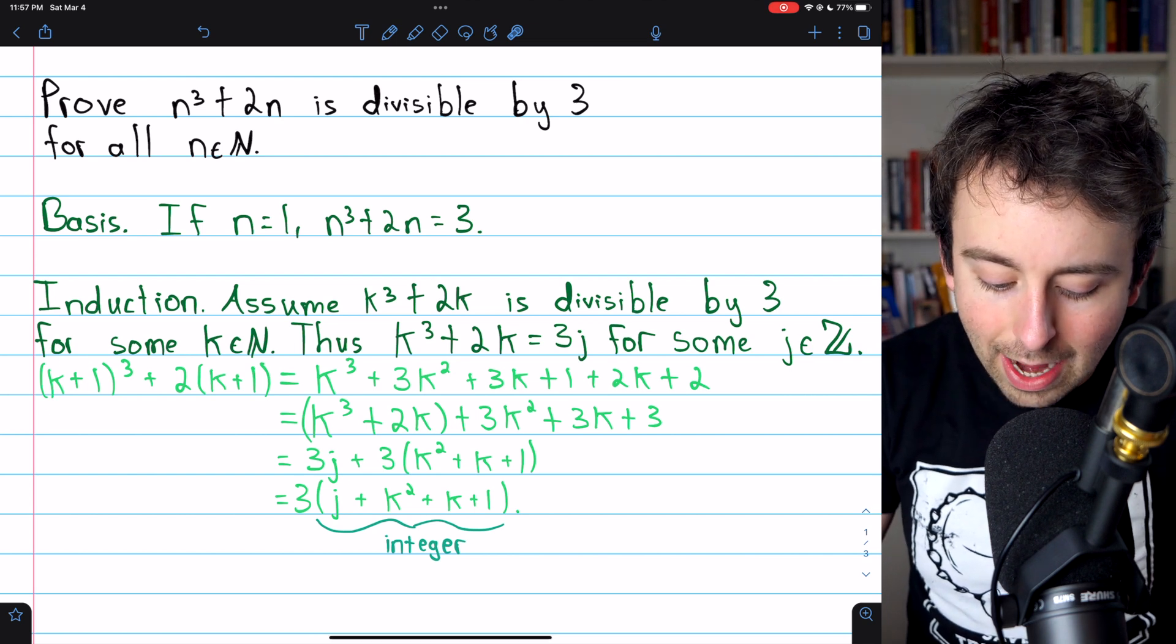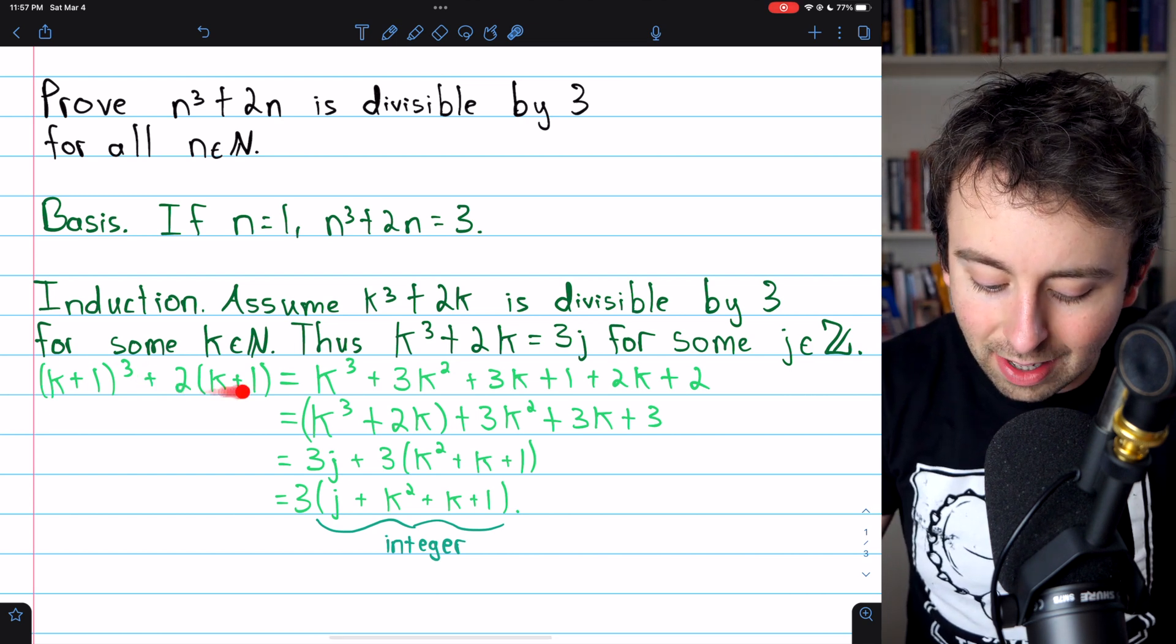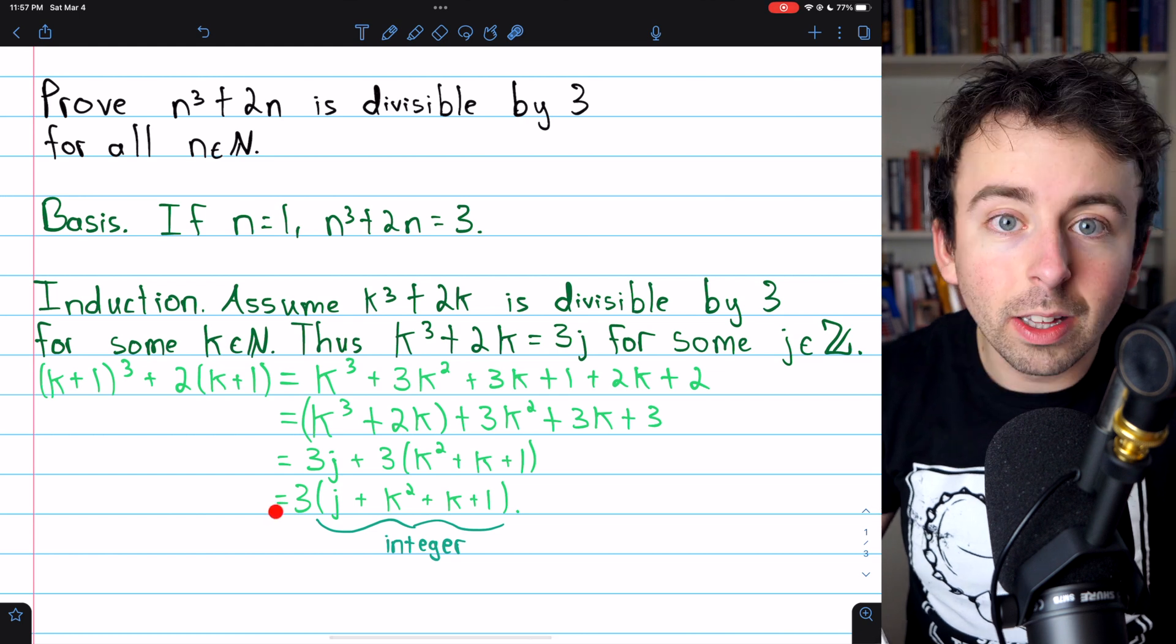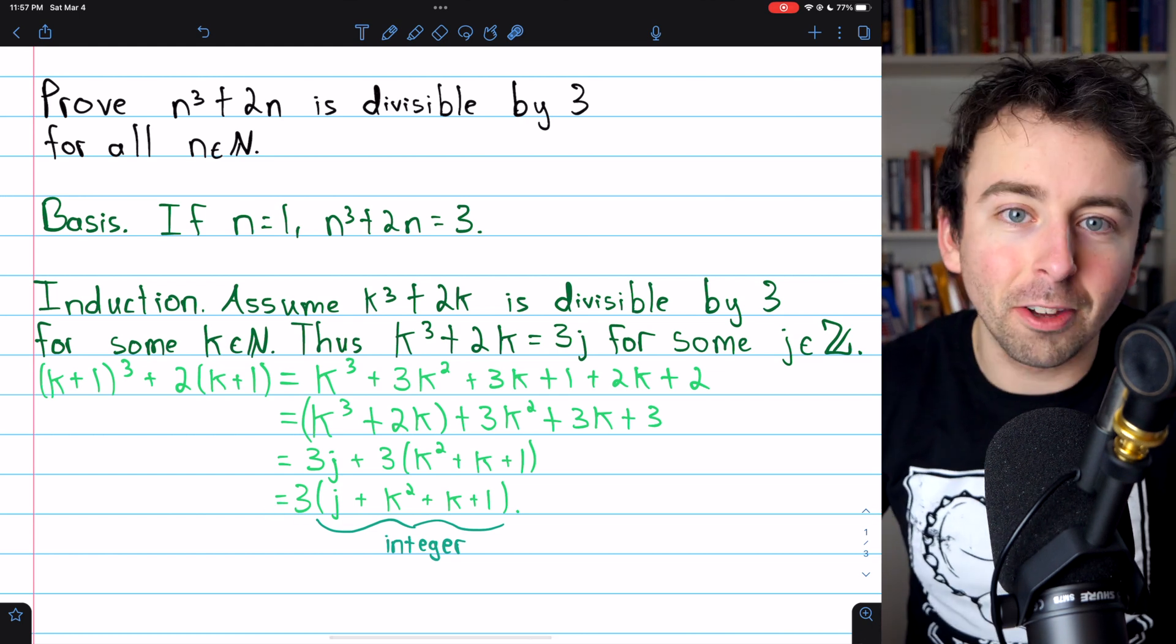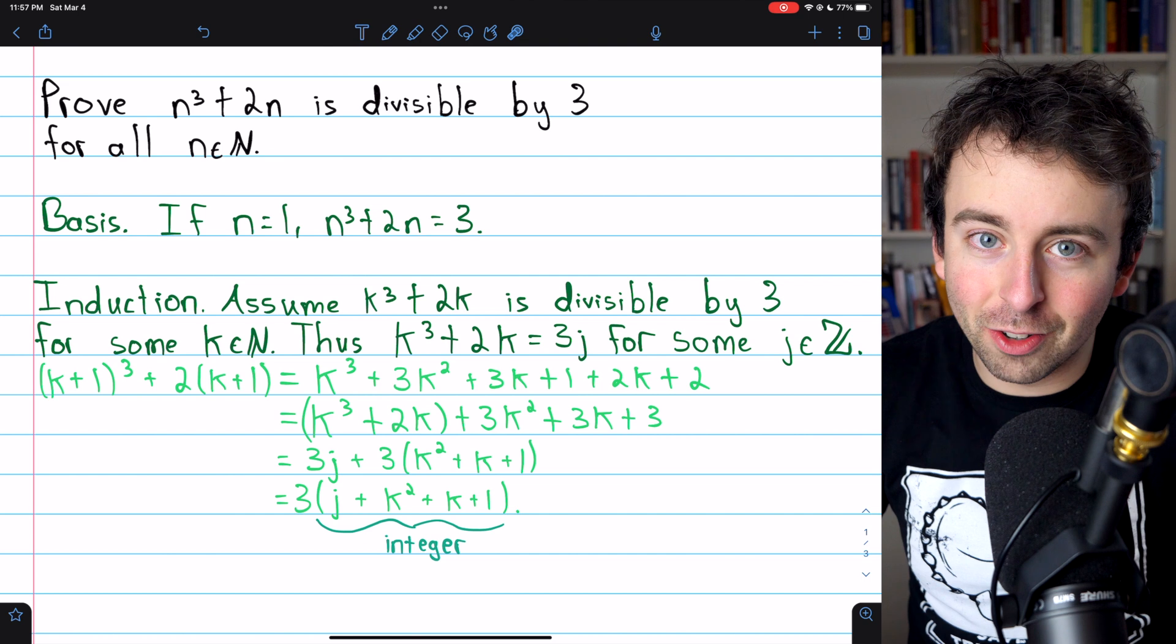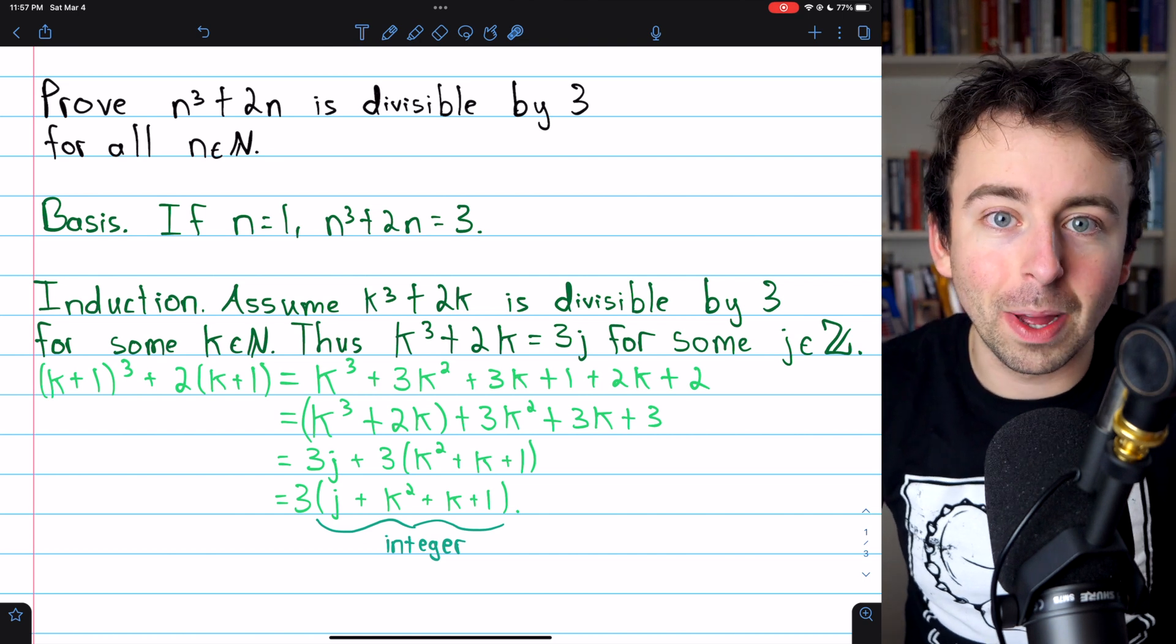which is equal to 3 times some integer. By definition, that means it's divisible by 3.